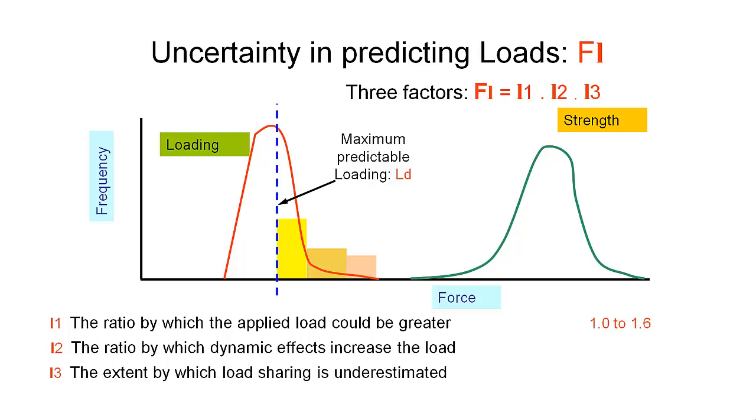In terms of recommended factors for our ratio by which the applied load could be greater, we want that to be somewhere between 1 and 1.6. If we think it needs to be any bigger than 1.6, then perhaps we haven't estimated our loads very accurately in the first place and we should have a look at that in more detail. The dynamic effects, that can actually be quite high, so sometimes even up to three or even more in the cases where we have extreme dynamic loadings. In terms of the extent by which load sharing is underestimated, usually between 1 and 1.6 are factors that we would use in those circumstances.